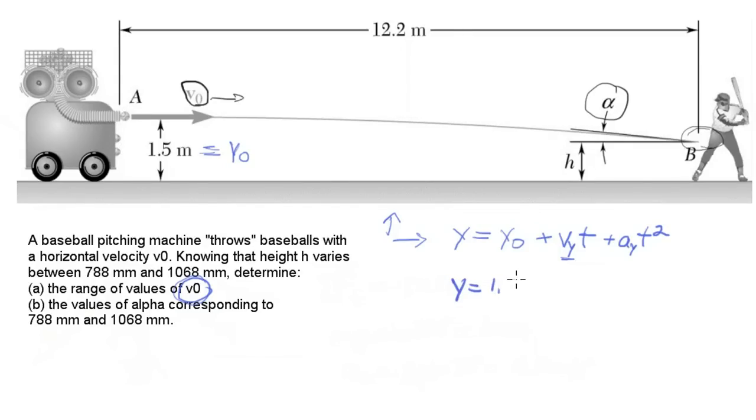And the acceleration in the y direction is just due to gravity. So we'll rewrite this here. y equals 1.5 meters. And gravity, we're going to define y in the up direction, gravity is in the down direction, so the acceleration is negative. I'm just going to write it as g initially, t squared. So there's our equation for y.